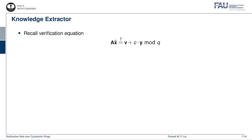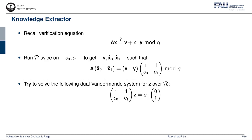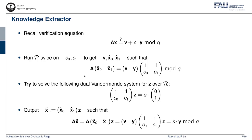Let us examine how a knowledge extractor could be constructed for this Schnorr-like argument. We recall the verification equation. We construct an extractor such that it runs the prover twice on two different challenges C0 and C1, to get two different communication transcripts, both of which satisfy the verification equation. In matrix form, they can be written as shown on screen. The extractor would then try to solve the following dual Vandermonde system for a vector Z over the ring R — I call this a dual Vandermonde system because it is defined by the transpose of a Vandermonde system defined by C0 and C1. If the extractor is successful in solving the dual Vandermonde system, it can compute the extractor witness accordingly.